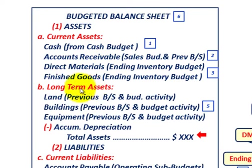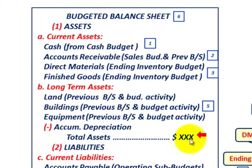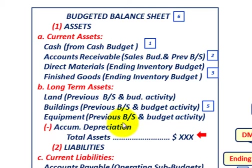Finished goods also come out of the ending inventory budget, comprising our current assets. Next are long-term assets: land from the previous balance sheet plus any budgeted activity for the period; buildings from the previous balance sheet plus any budgeted activity from our capital budget; and equipment from the previous balance sheet plus budgeted activities. From all long-term assets, we subtract out any accumulated depreciation for the period, netting against all long-term assets.